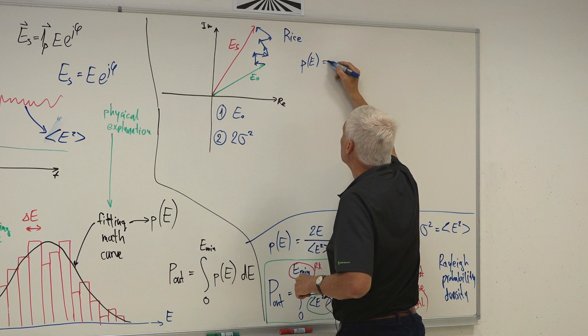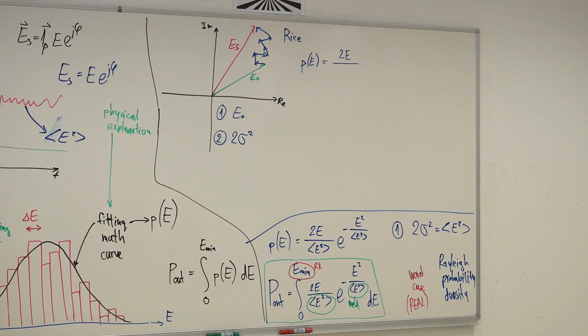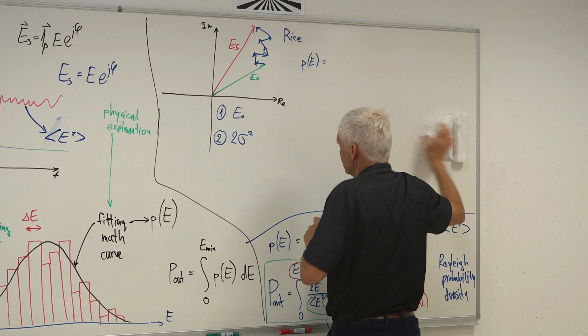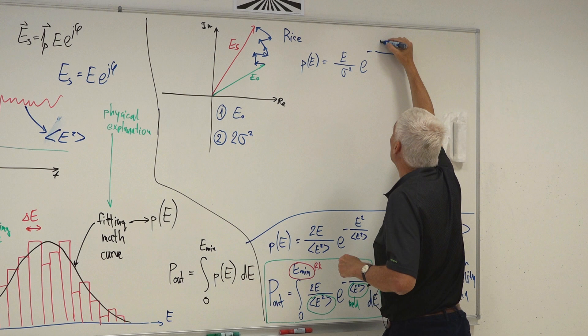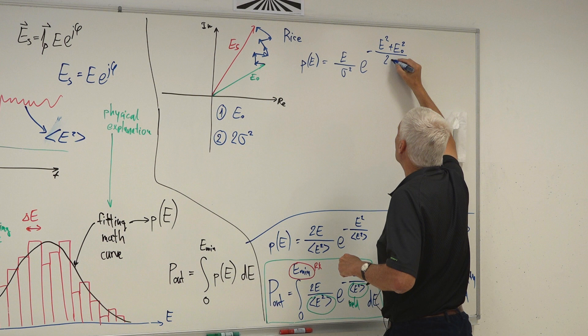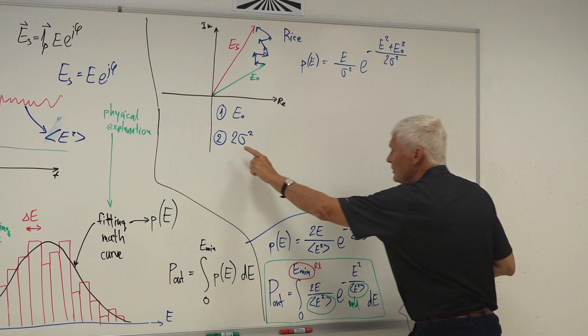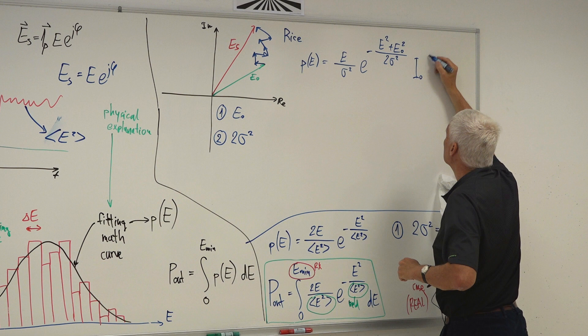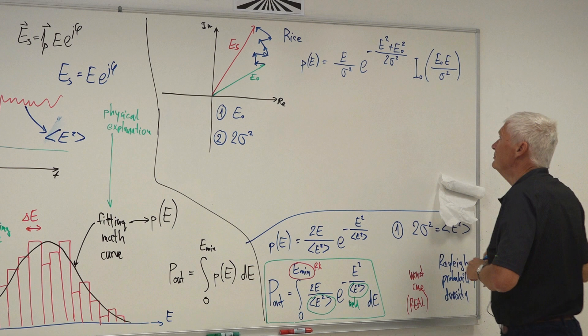The probability density function P(E) for the Rice distribution looks quite similar to the Rayleigh distribution. It is E over σ² times the exponent of minus (E² + E0²) over 2σ², where E0 is one piece of information and 2σ² is the other, times the modified Bessel function I0 of (E · E0 / σ²).